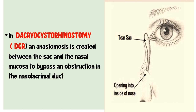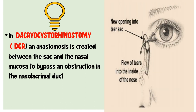In dacryocystorhinostomy (DCR), if there is obstruction in the nasolacrimal duct, tears flow back into the eye causing watering. In DCR surgery, we create an anastomosis between the lacrimal sac and the nasal mucosa, bypassing the nasolacrimal duct. We create a new opening by punching a hole through the medial orbital wall — removing part of the lacrimal bone and part of the frontal process of the maxillary bone — so tears can flow straight into the nose without going through the nasolacrimal duct.